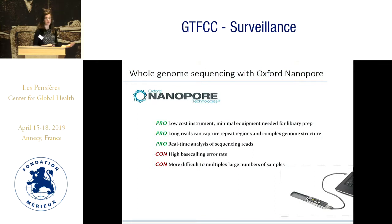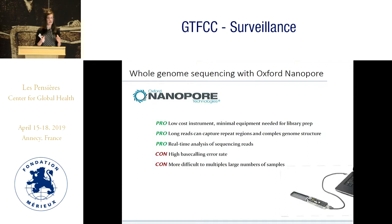The other thing worth noting is that it's a little bit more difficult to multiplex a large number of samples. Right now you could do 12 or 24 samples on one run at a time, and we've had quite good success running six or eight samples at a time. But if you have an Illumina machine, you might be able to do 24 easily or even 96 with a more powerful machine.